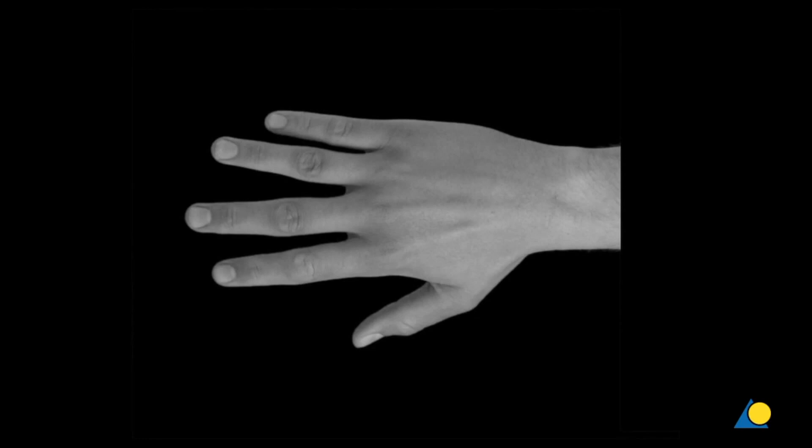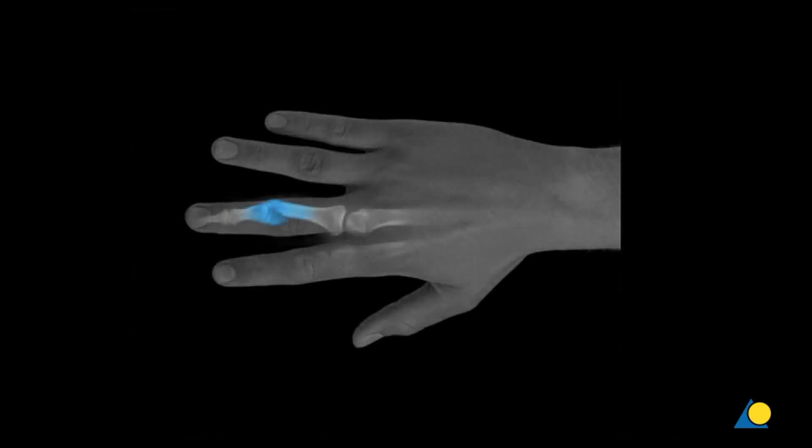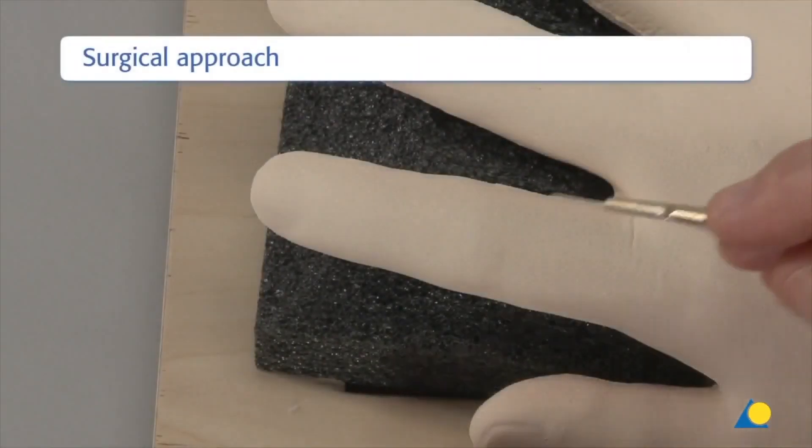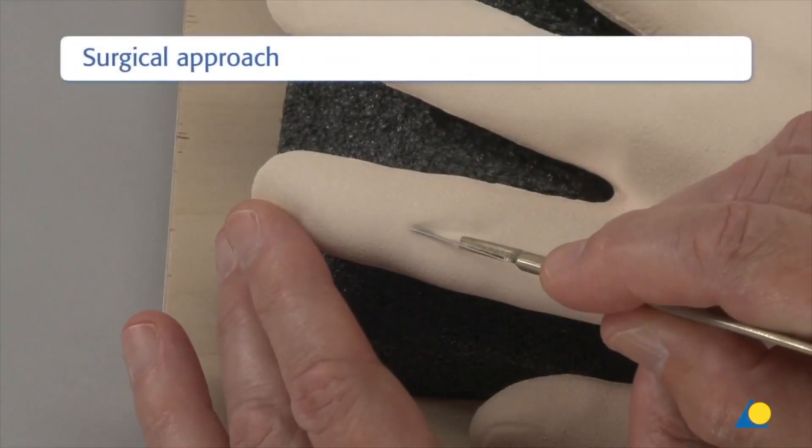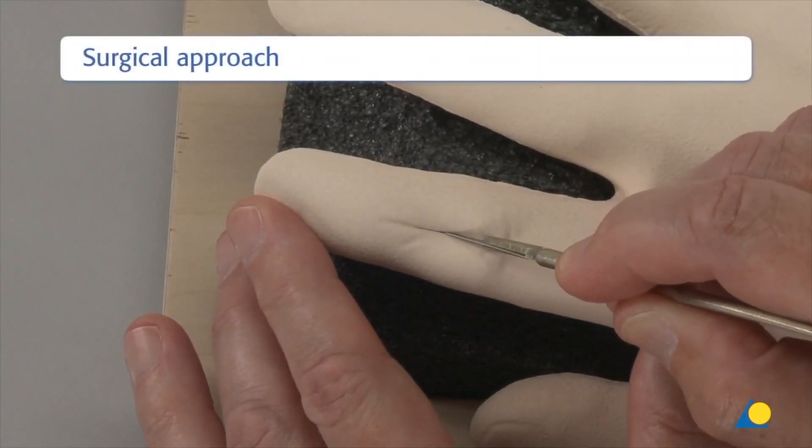The dorsal approach to the PIP joint is made through a curved longitudinal skin incision. It is also possible to use an S-shaped incision if there is an existing injury or a longitudinal midline incision for an arthrodesis. A straight dorsal longitudinal incision is made on the PIP joint of the index finger.